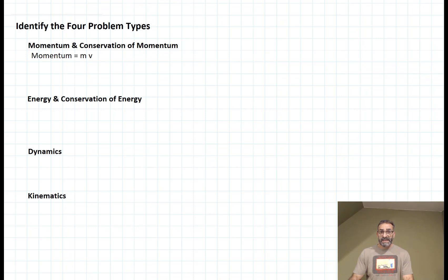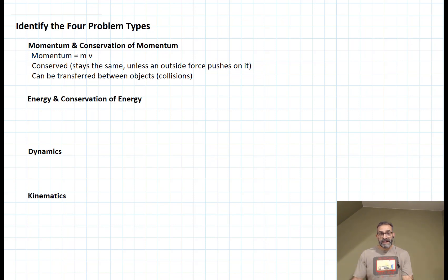Momentum is mass times velocity. You could think of it as how hard is it to stop something that's moving. Momentum is conserved - it stays the same as long as no outside force reaches in and pushes on our system, and it can be transferred from one object to another, typically in a collision.